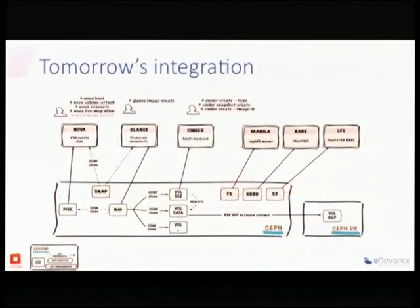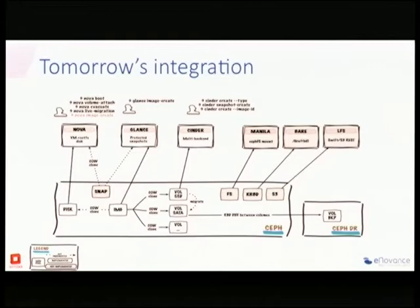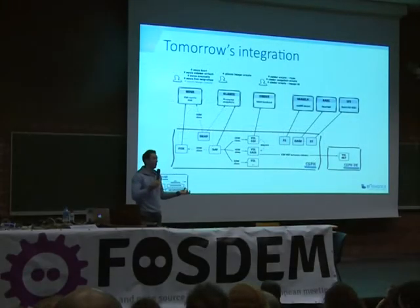Something that won't be in Icehouse because the project isn't even incubated into OpenStack yet is Manila — the distributed file system as a service project. But we could do this with CephFS. OpenStack also has a bare metal functionality where you can provision physical hosts to clients, and to attach block devices you can simply use the RBD kernel module and map a block device on the host.